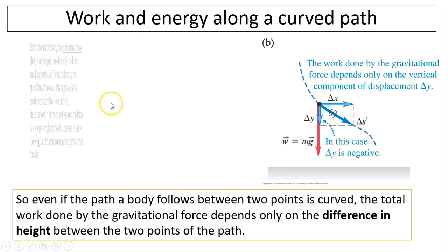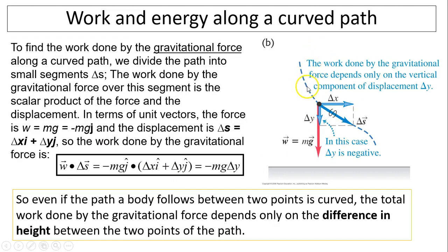Work and energy on a curved path. Suppose an object moves along a curved path. The work done by the gravitational force depends only on the vertical component. To find the work done along a curved path, we divide the path into small segments delta-S. The work done by gravity over a segment is the scalar product of force and displacement: force is negative Mg·j, displacement delta-S has x and y components. The dot product gives negative Mg·delta-y — so work done by gravity depends only on the vertical displacement, not the shape of the path.